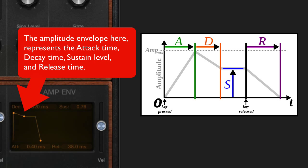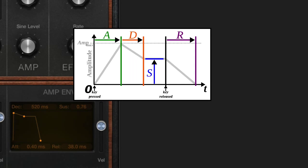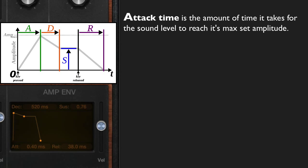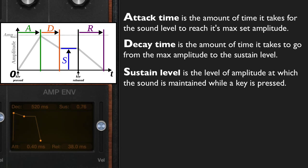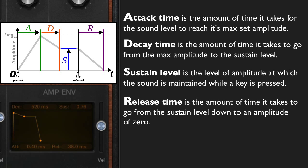The amplitude envelope is generally managed by four related controls. Attack time is how long it takes for a sound to reach its maximum amplitude when a key is pressed — from zero to that set maximum amplitude. Decay time is how long it takes for a sound to go from the max amplitude down to a sustained level. That sustained level is the level at which a sound is maintained while a key is pressed. Finally, release time is how long it takes to go from that sustained level down to zero amplitude after the key is released.